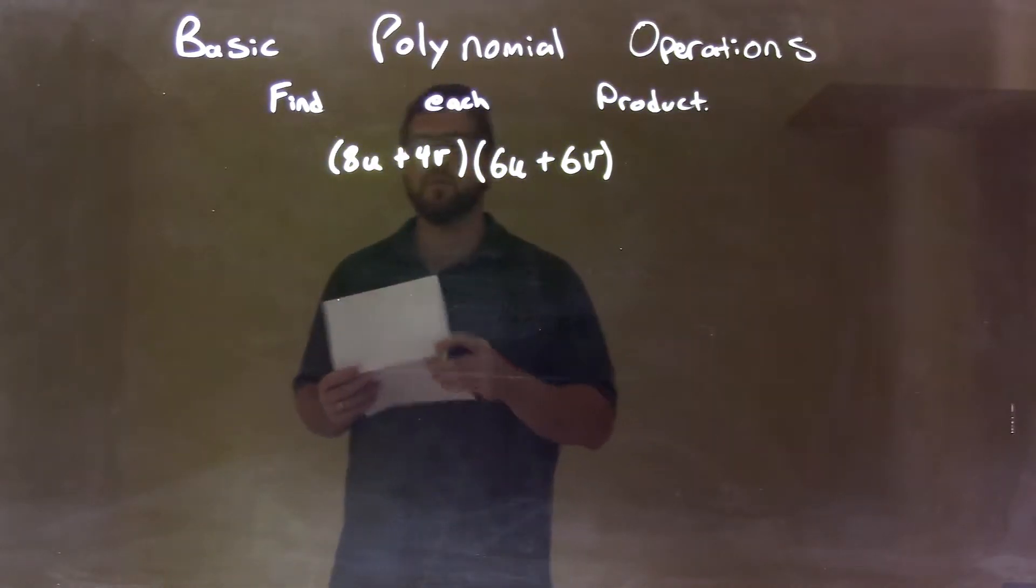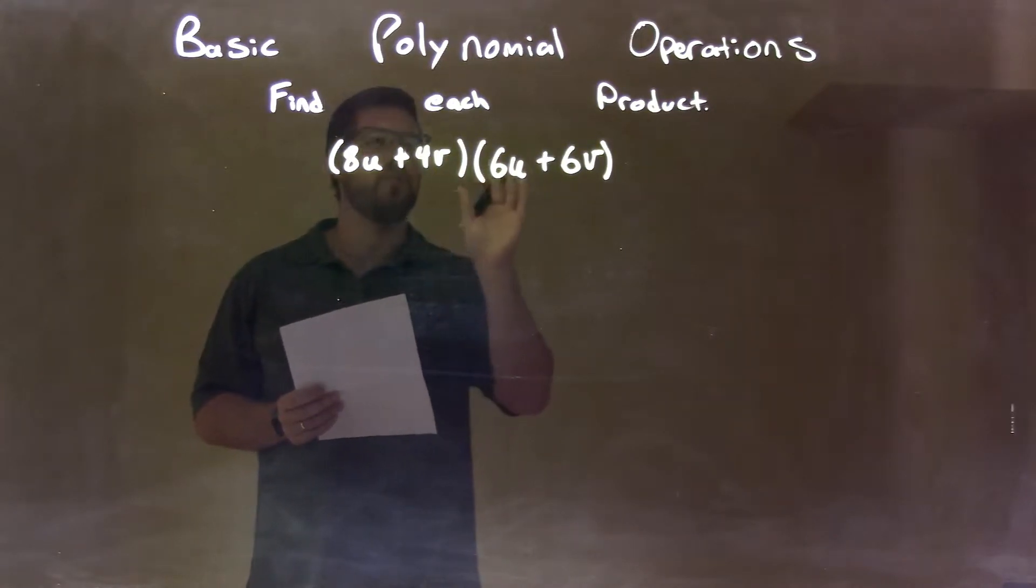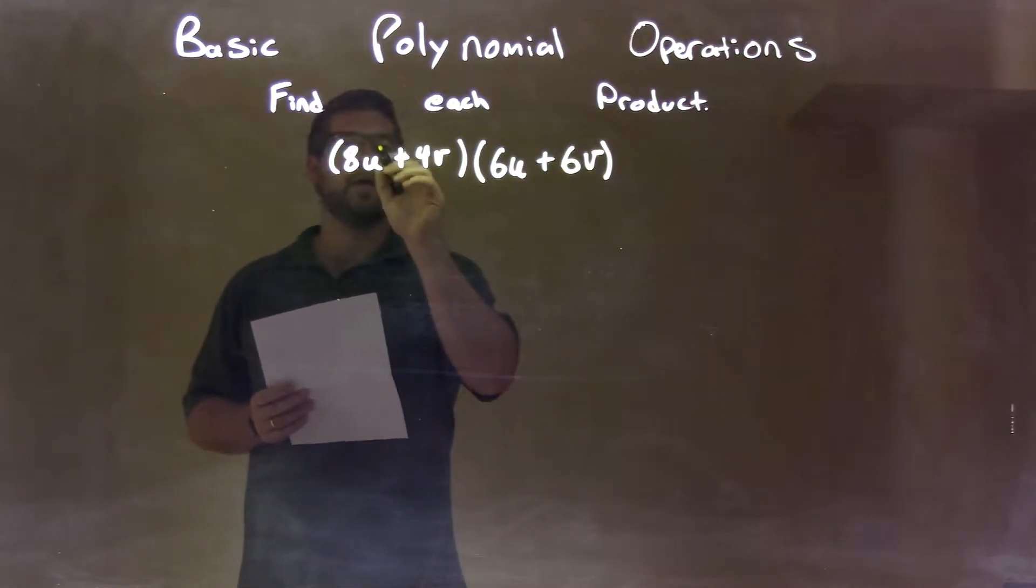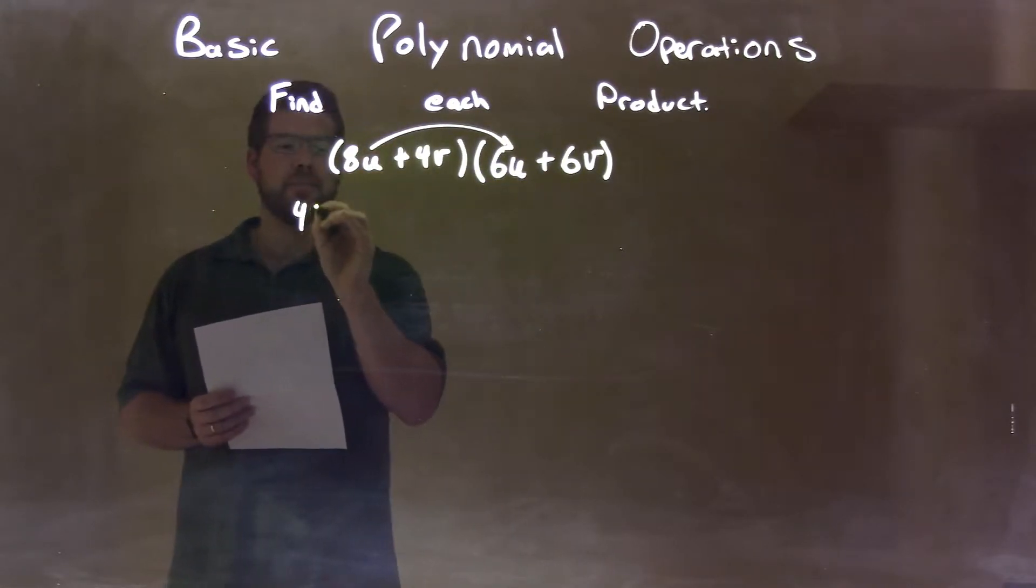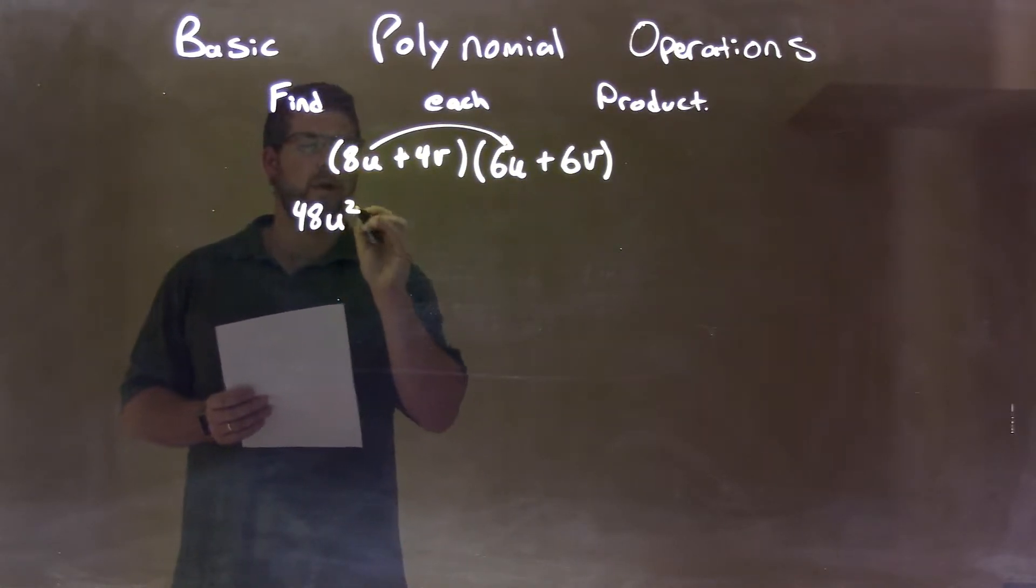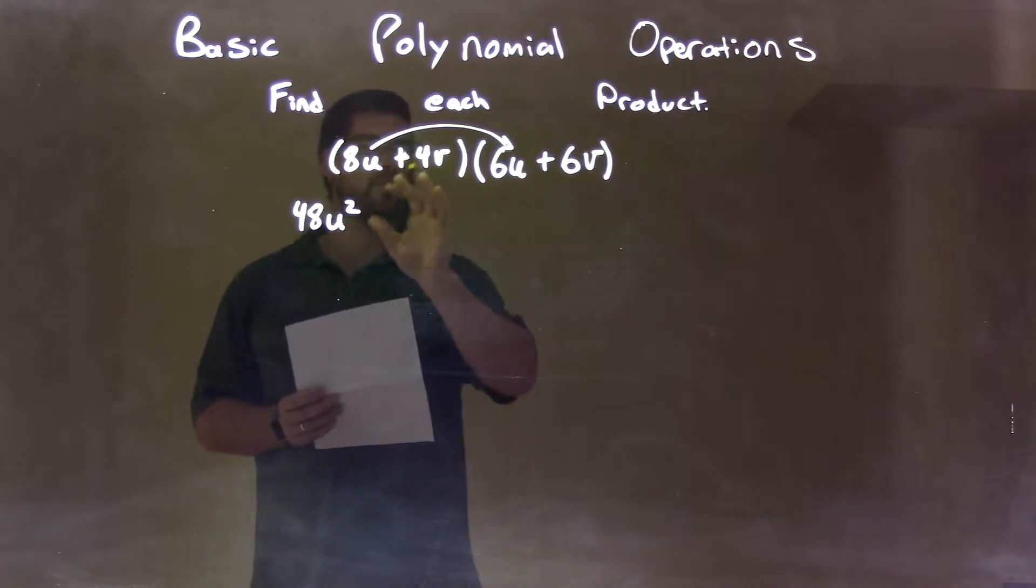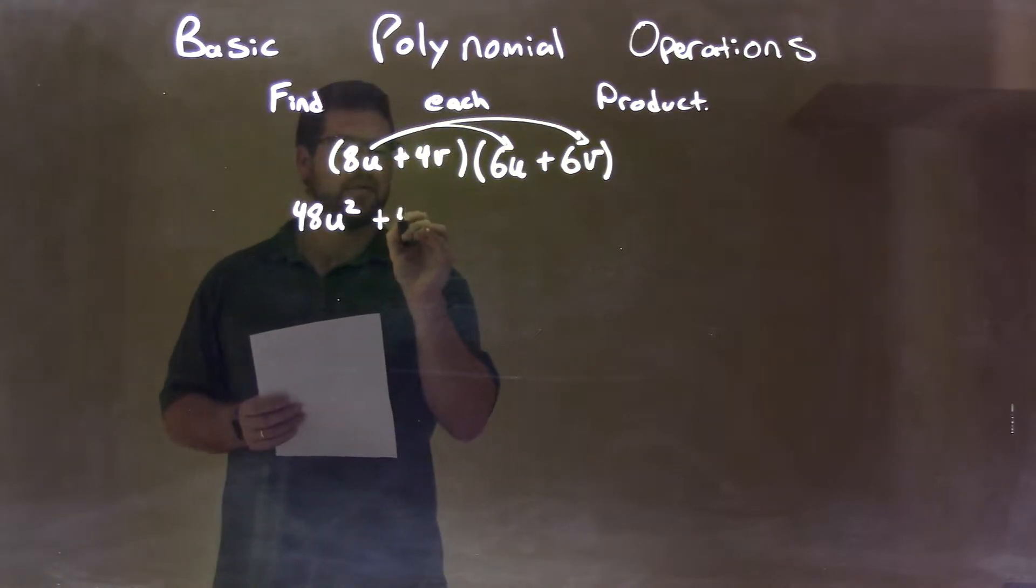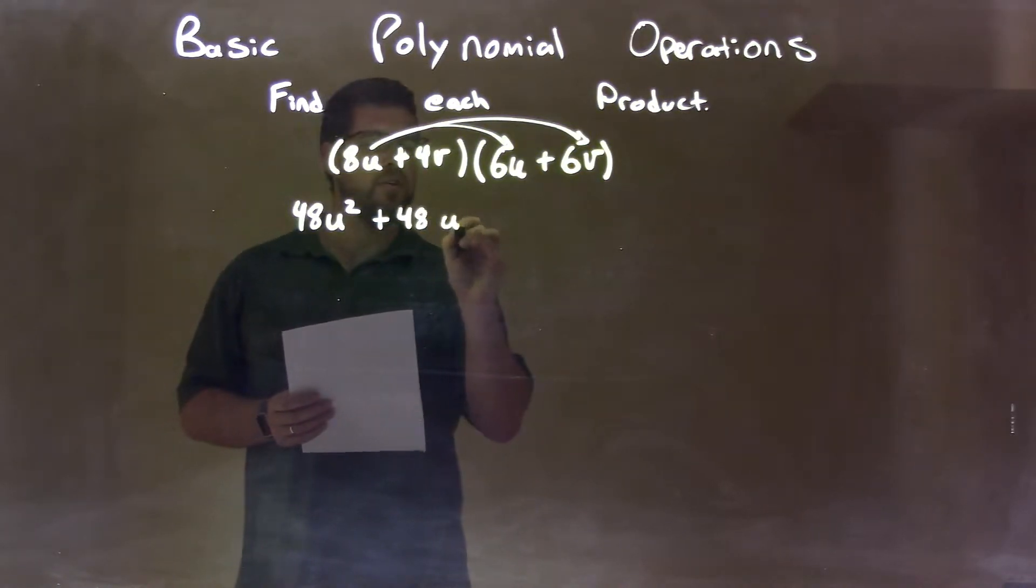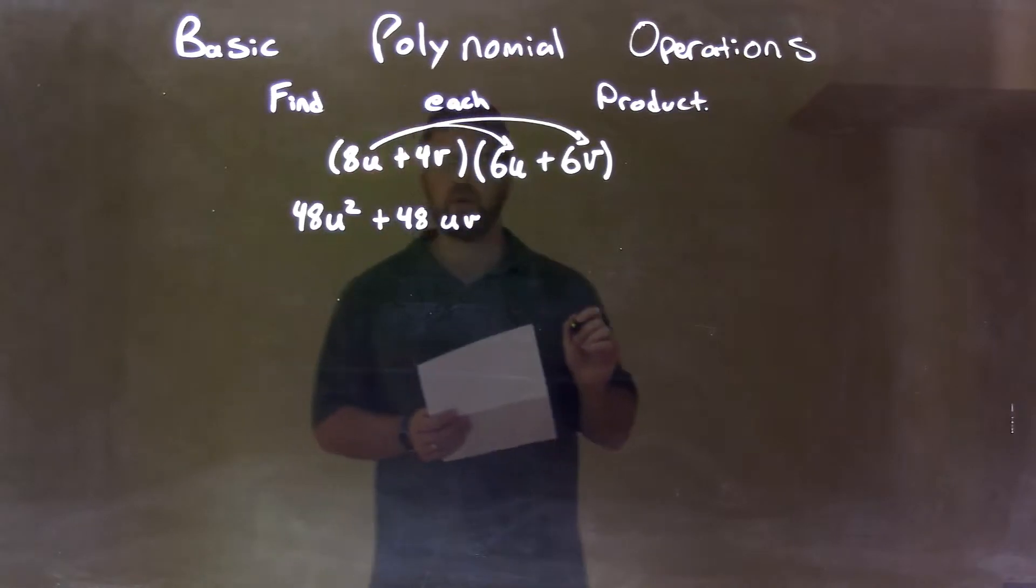Well, what I want to do is multiply all parts of my first parenthesis by all parts of my second parenthesis. So 8u times 6u is 48u squared. Now 8u times 6v is 48uv, u times v.